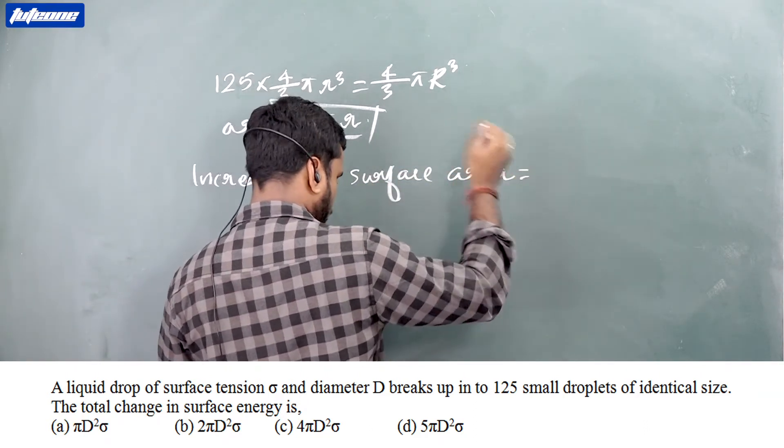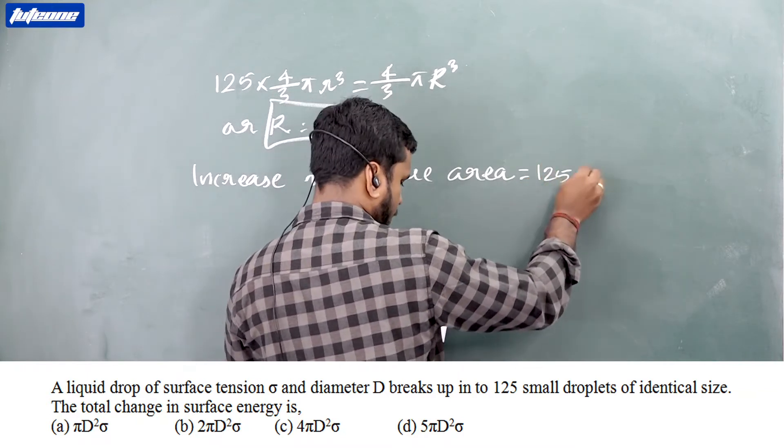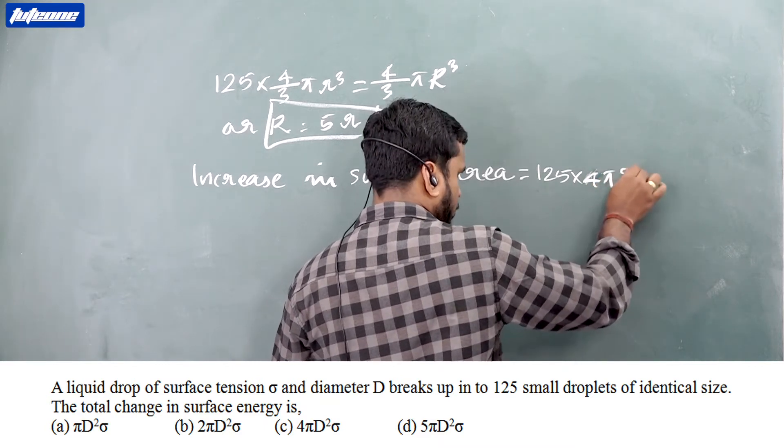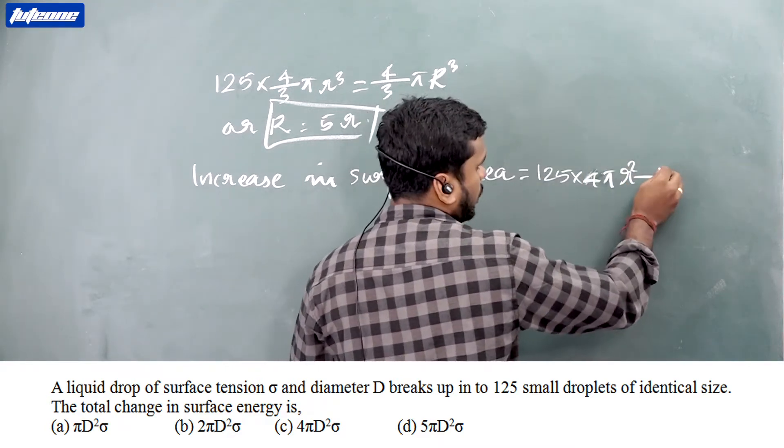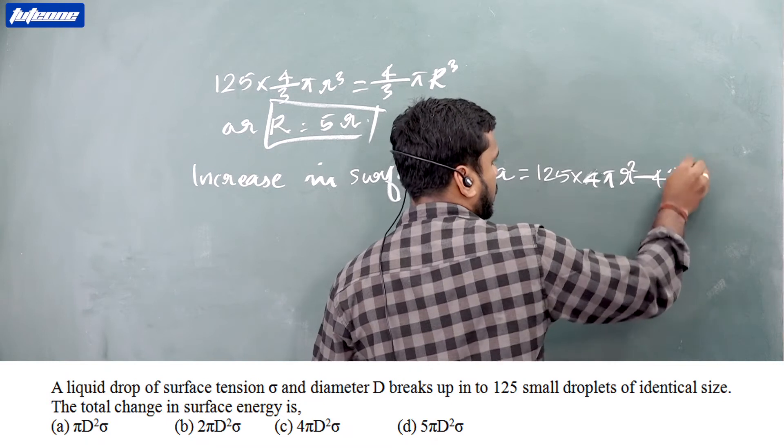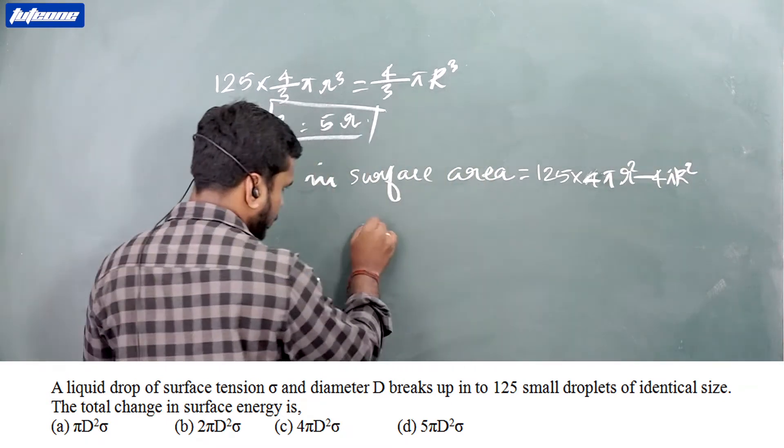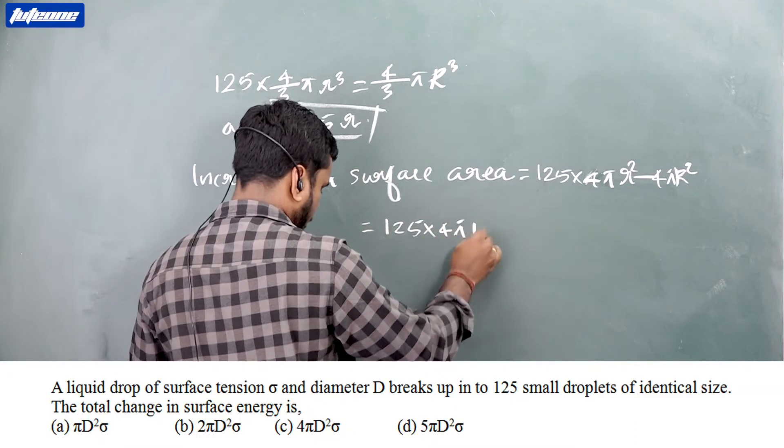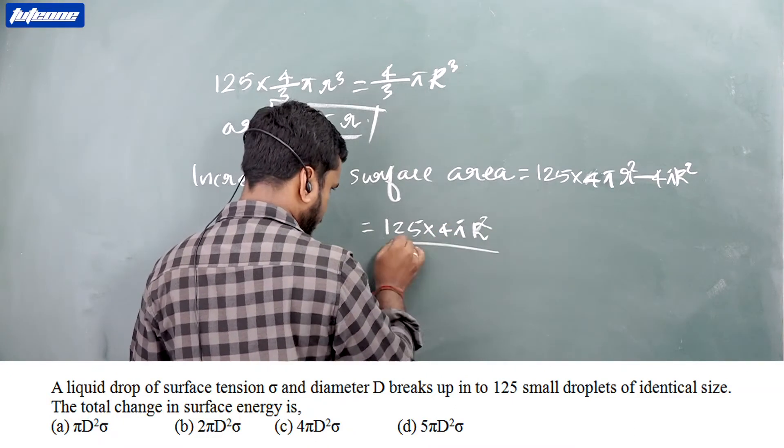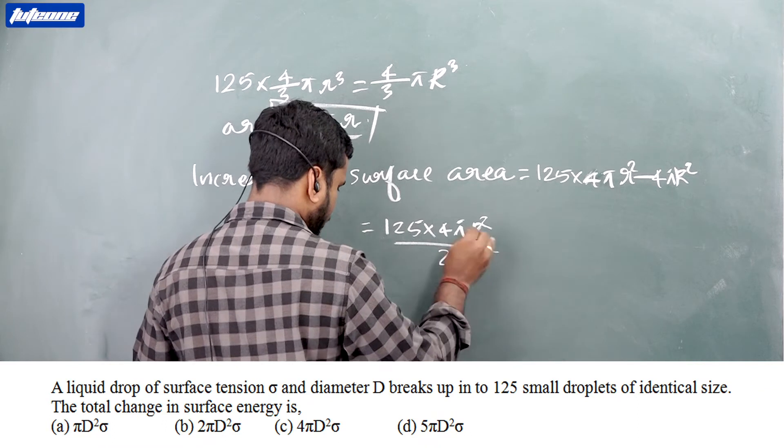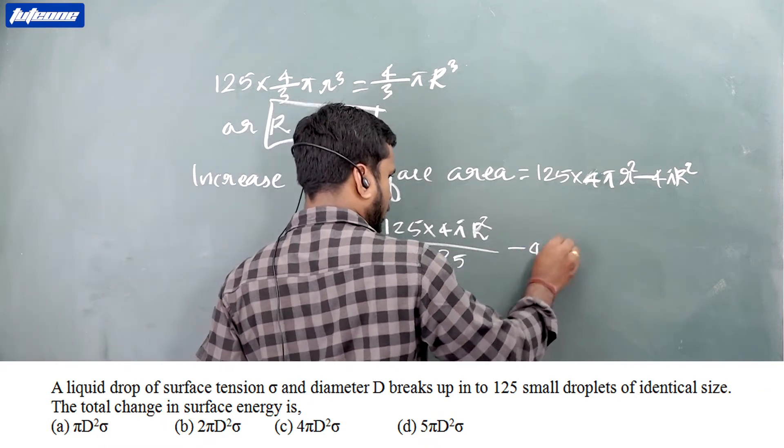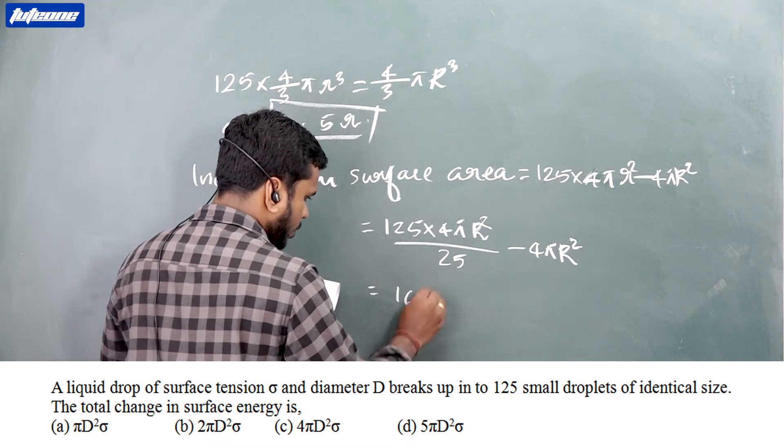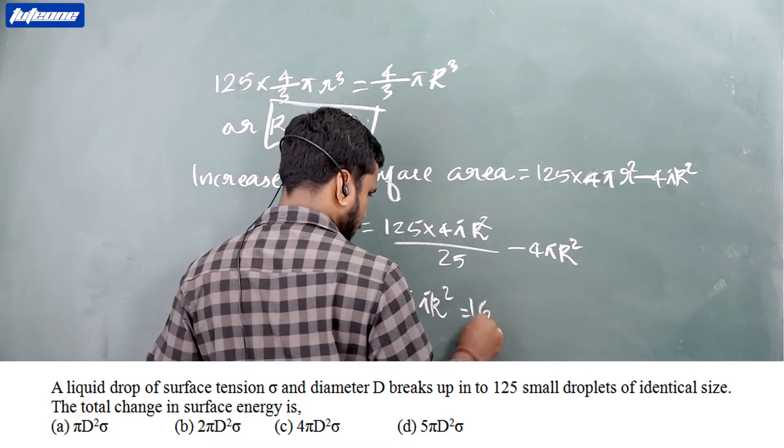Change in surface area equals 125 into 4 pi r square minus 4 pi R square. So that is equal to 125 into 4 pi r square divided by 25 minus 4 pi R square. That's equal to 16 pi R square, equal to 16 pi times D by 2 square, that is equal to 4 pi D square.